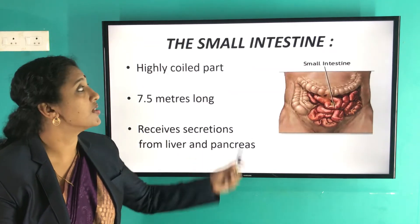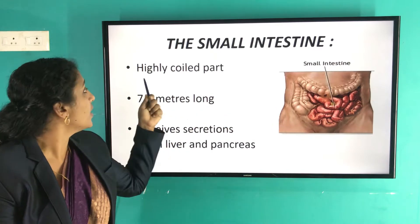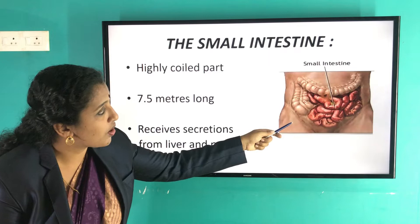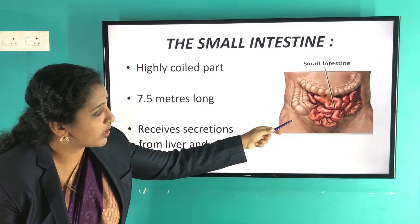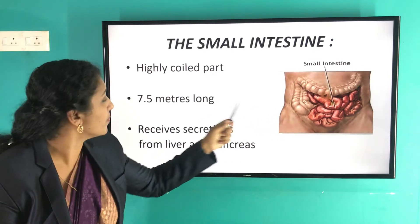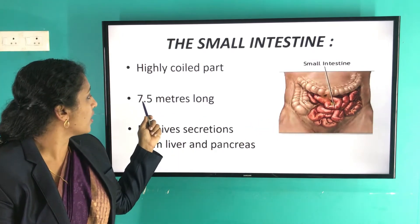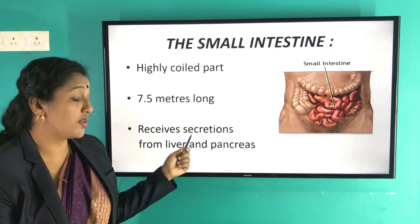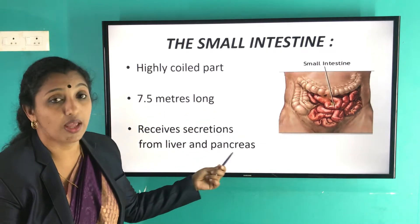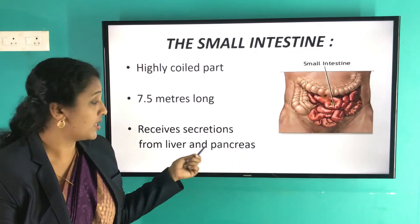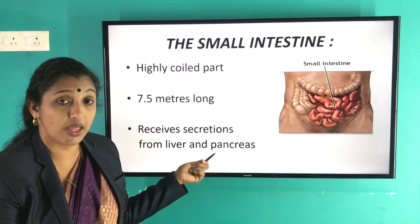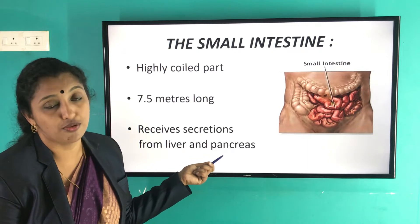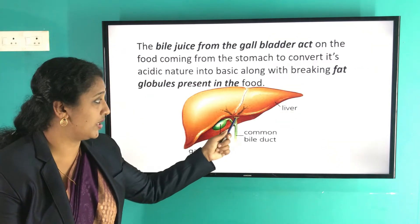The next part of the alimentary canal is the small intestine. It is a highly coiled structure, 7.5 meters long. It receives secretions from the liver and pancreas — these glands secrete enzymes that help in digestion of food materials.